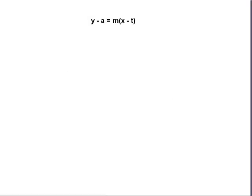Let's convert the general algebraic point-slope equation, y minus a equals m times x minus t. This is in point-slope form, and we know that the slope is m, and that it goes through some point at.